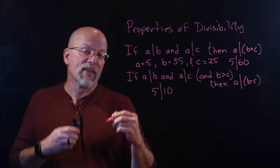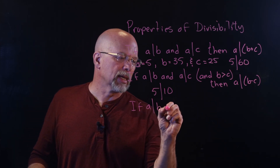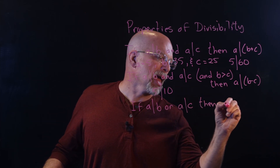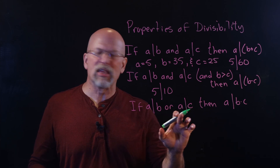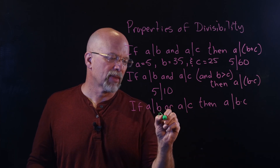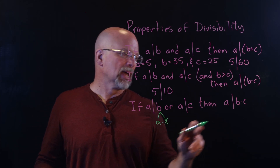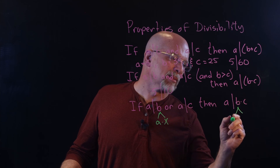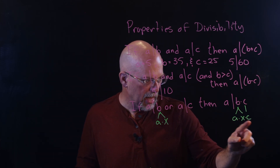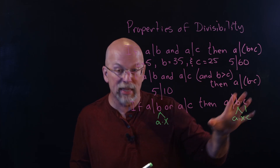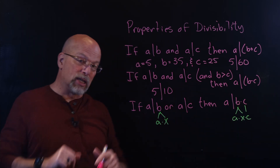Another property important for factorization: if A divides B or A divides C, then A divides B times C. For instance, if A divides B, there's some integer X where A times X equals B. Then B times C equals A times X times C, and you can see that A is a component of that product — so A does divide B times C.